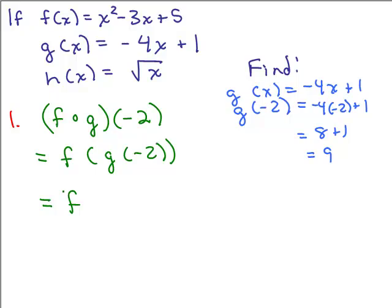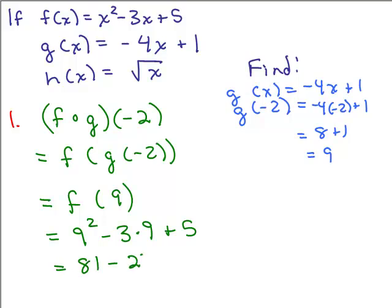Now that we know g of negative 2 is 9, we need to figure out what f of 9 equals. f of x is x squared minus 3x plus 5, so we're going to plug in 9 for x. That gives you 9 squared minus 3 times 9 plus 5, which is 81 minus 27 plus 5. Going left to right: 81 minus 27 is 54, add 5, and the answer is 59.